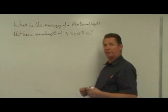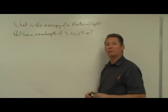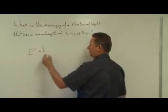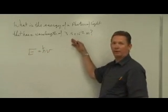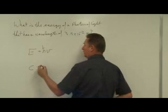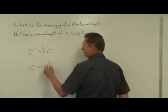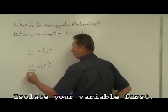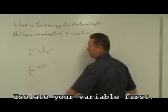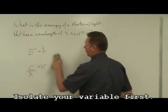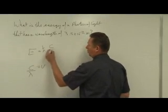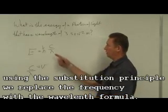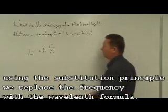Here we have an example where we have the wavelength of the light and need to calculate the energy of a photon. Remember E equals Planck's constant times frequency, but we've been given wavelength. We also know that the speed of light equals frequency times wavelength. If I divide both sides by the wavelength, I get frequency equals c over wavelength, and I can substitute that in. So energy equals Planck's constant times c over wavelength.